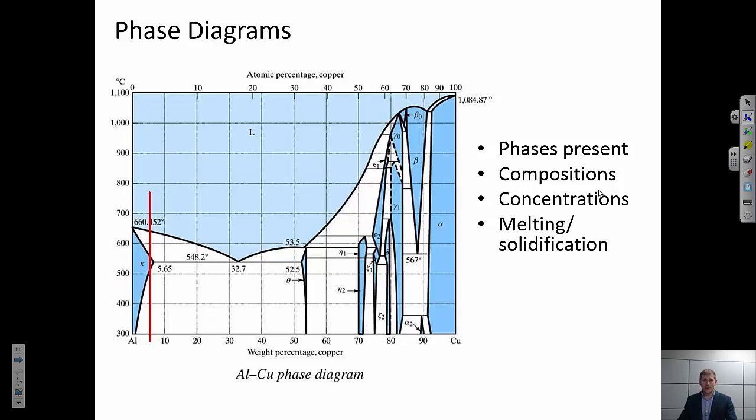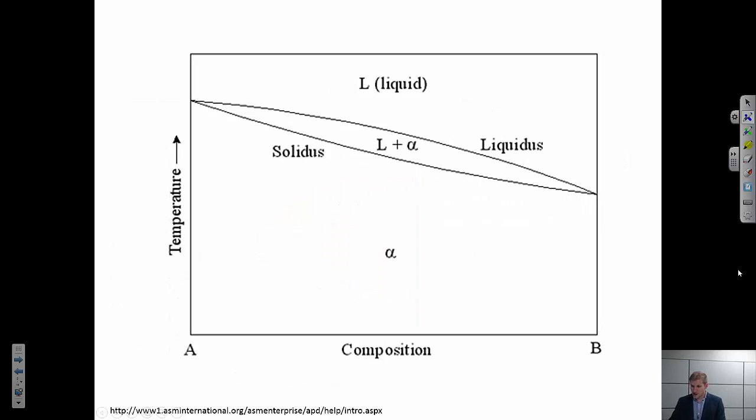Now this is a very complicated system I've decided to show you at the beginning just to scare you a little bit. You see a whole bunch of different phases present, a bunch of different fields with multiple phases present. We're going to start with something a little bit simpler and this is called an isomorphous binary phase diagram.